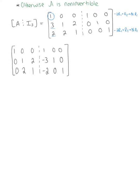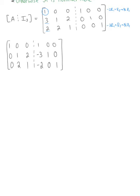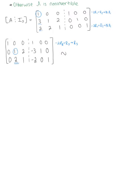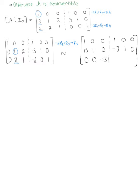Moving to the second pivot, we eliminate the entry below it by doing −2 times row 2 plus row 3 to get a new row 3. Row 1 stays: 1, 0, 0, 1, 0, 0. Row 2 stays: 0, 1, 2, −3, 1, 0. Row 3 becomes: 0, 0, −3, 4, −2, 1.